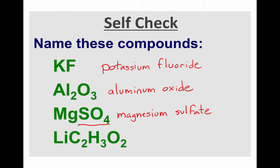Finally, let's try the LiC2H3O2 compound. What is the name of that compound? That is lithium acetate. Again, we see one of those polyatomic ions.